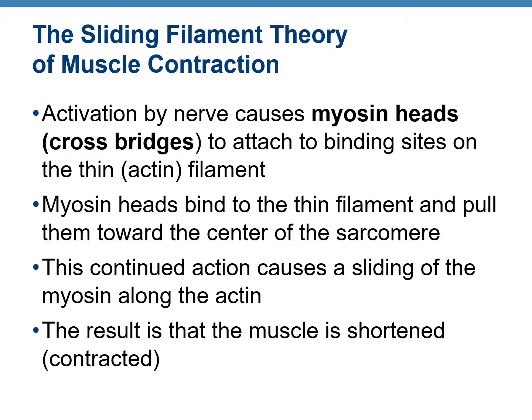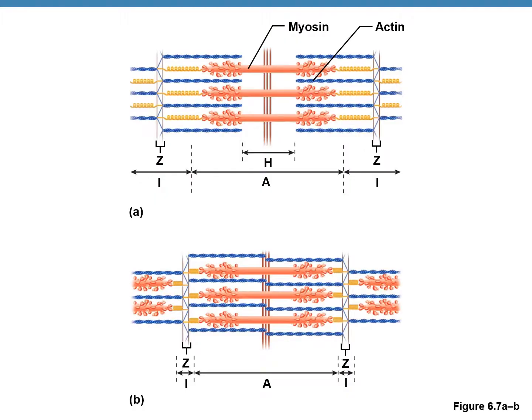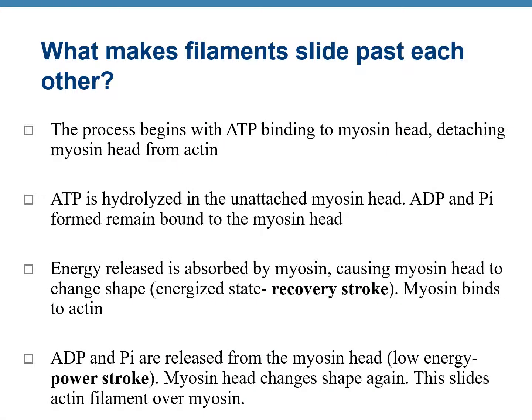What causes the actin filament to slide over the myosin filament? It is controlled by the nervous system. An action potential or nerve impulse comes from the nerve and it causes the myosin head to rise up and attach to specific binding sites on the thin actin filament. This binding is known as forming cross bridges. After the myosin head is bound to the thin filament, it starts pulling the actin filaments towards each other, narrowing the H band. This continued pulling causes the actin to slide over the myosin. The sliding of the filaments occurs in a cyclical fashion.